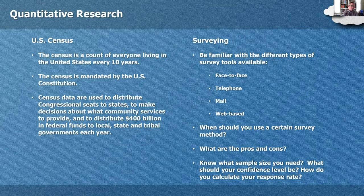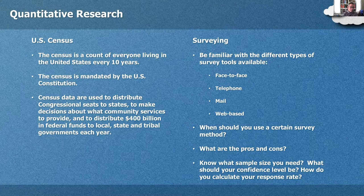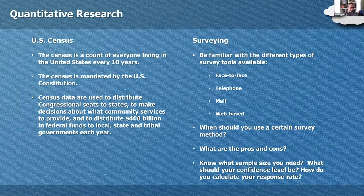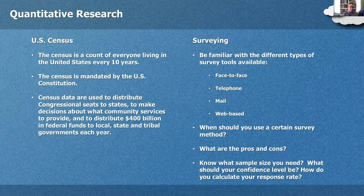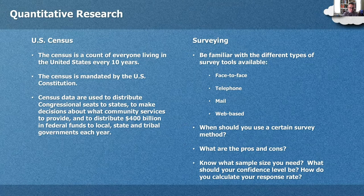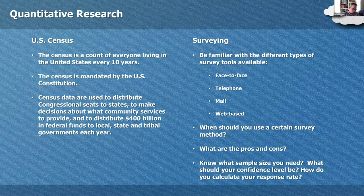The U.S. Census is a count of everyone living in the United States, conducted every 10 years, mandated by the U.S. Constitution. It's used to distribute congressional seats to states, help cities make decisions on community services, and determines how the federal government disperses $400 billion in funds to local, state, and tribal governments each year — making it very important to planning. We're on the cusp of another census release. Know what the census is and generally know about population trends in the country.